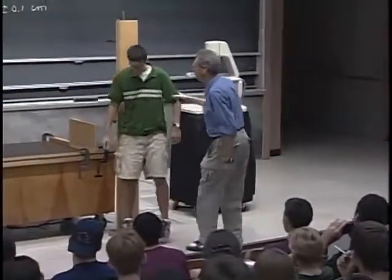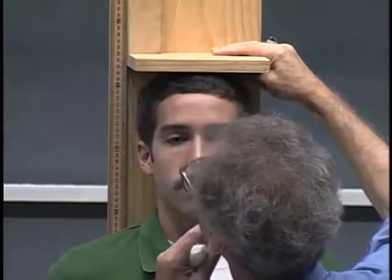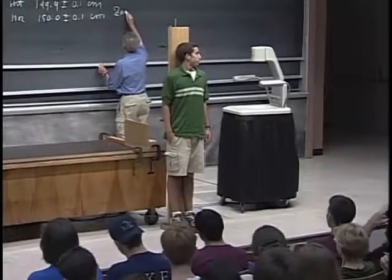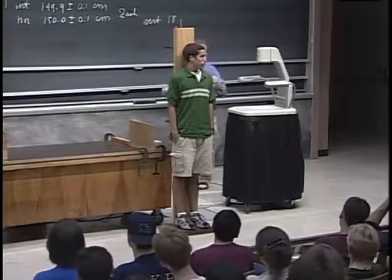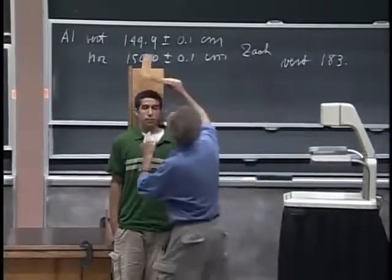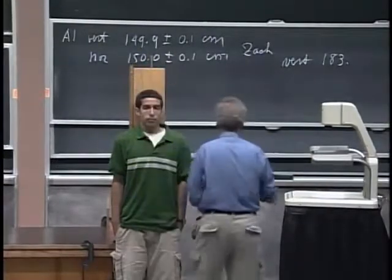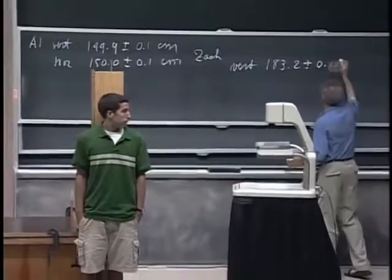What is your name? Zach. Nice day today, Zach. You feel all right? First lecture at MIT? Okay, stand there. 183.2 — this is vertical. 183.2 centimeters, and an uncertainty of about 0.1 centimeters. And now we're going to measure him horizontally.